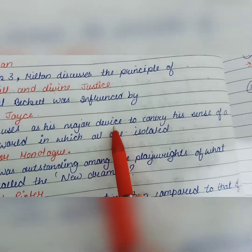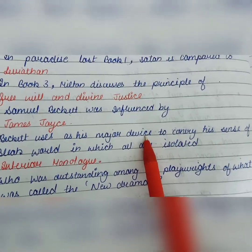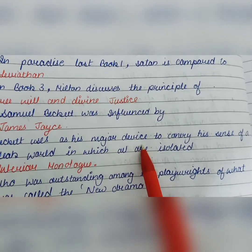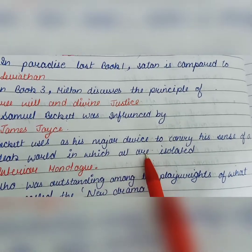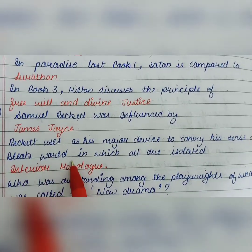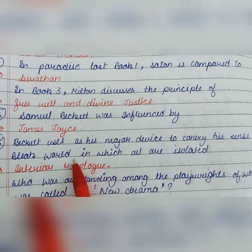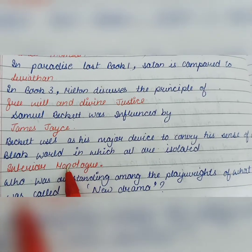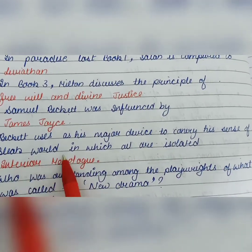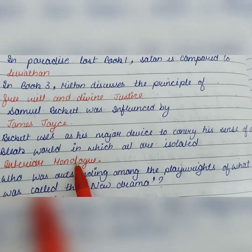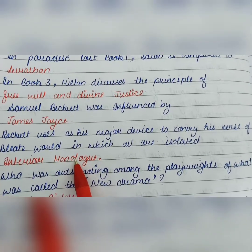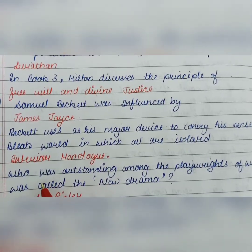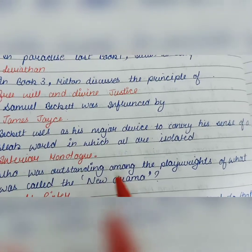Beckett uses interior monologue as his major device to convey his sense of a bleak world — a world where everyone is alone and unhappy. Interior monologue means a single character is speaking continuously within their own mind, expressing whatever they think.